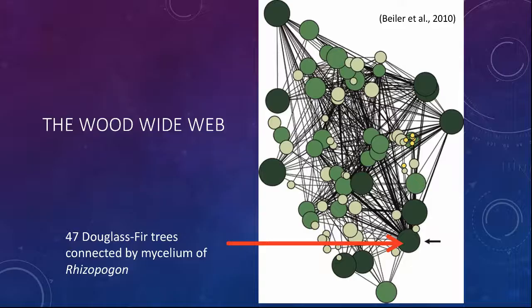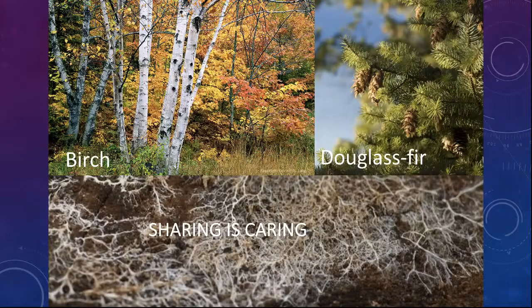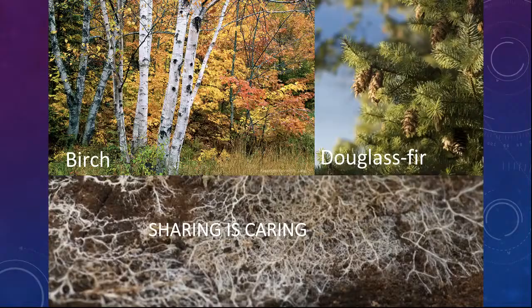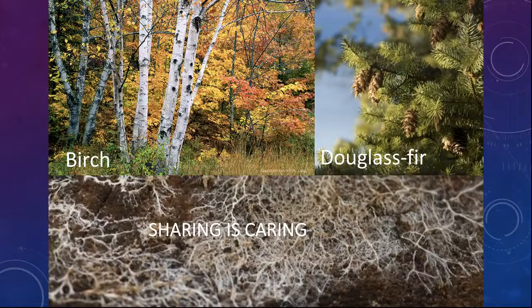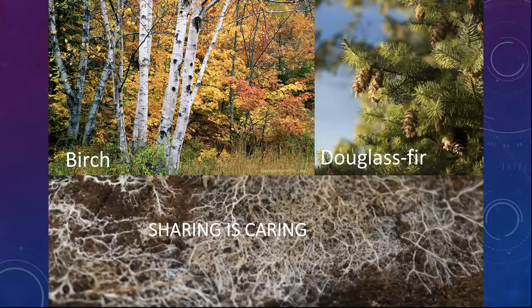It has been reported that there are four tons of mycelium of this network underground per person. These fungi also share nutrients between different species — not just the same species. For example, when Douglas fir is in winter it is still photosynthesizing and doesn't lose its leaves, while birch by then has lost its leaf matter and can no longer photosynthesize. The Douglas fir transfers its nutrients through mycorrhizal fungi, and the fungi feed the birch for its survival. Sharing really is caring in this scenario.